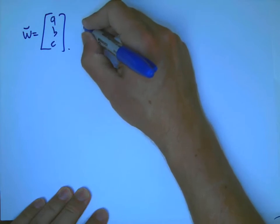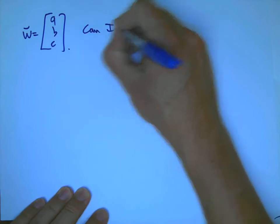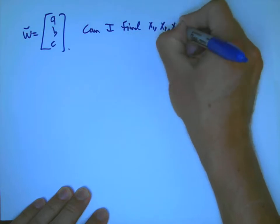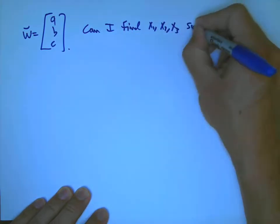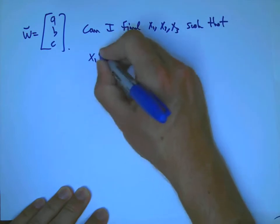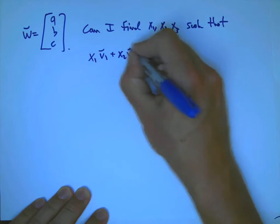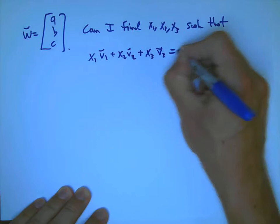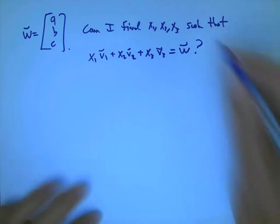And we want to ask, can I create, can I find x1, x2, x3? These are just numbers, not vectors. Such that x1 v1 plus x2 v2 plus x3 v3 equals w.